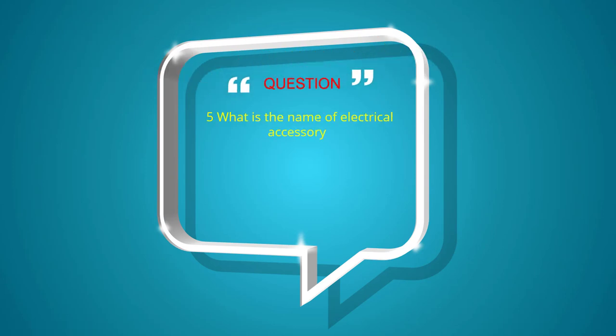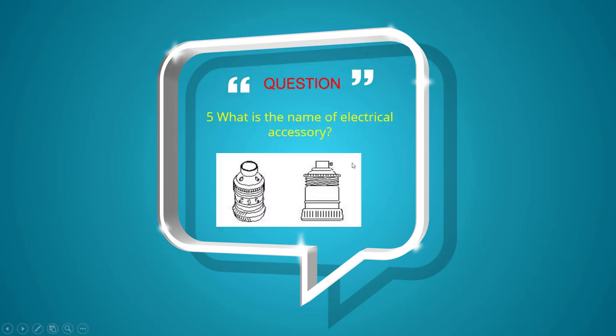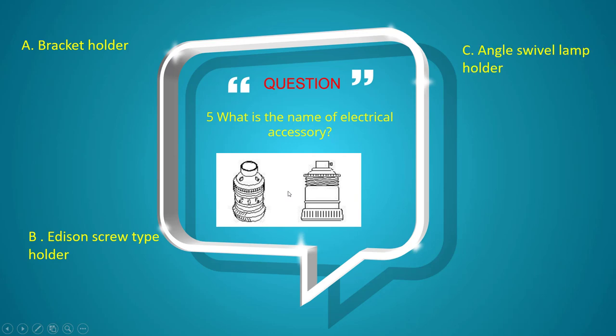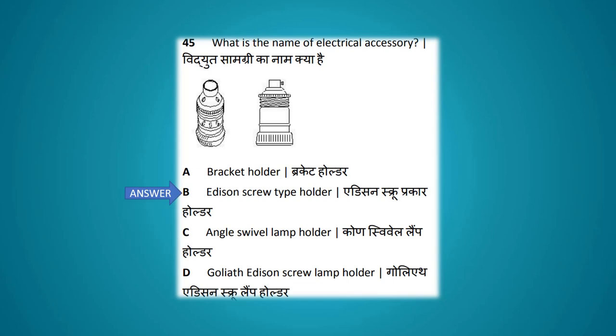What is the name of the electrical accessory shown? Options: bracket holder, addition screw type holder, angle swivel lamp holder, goliath addition screw lamp holder. The answer is addition screw type holder.